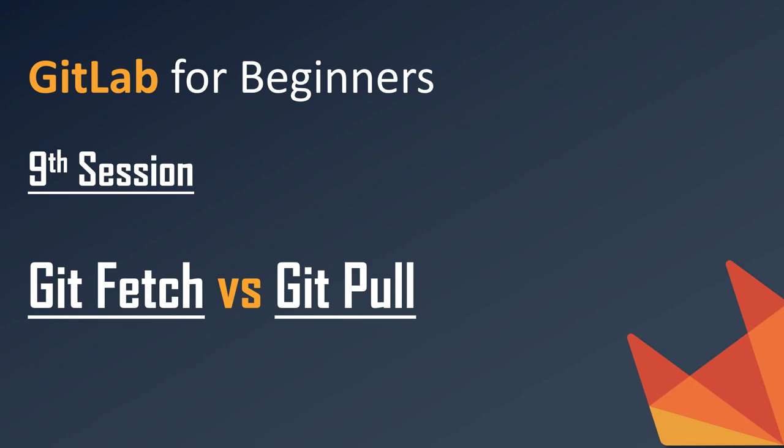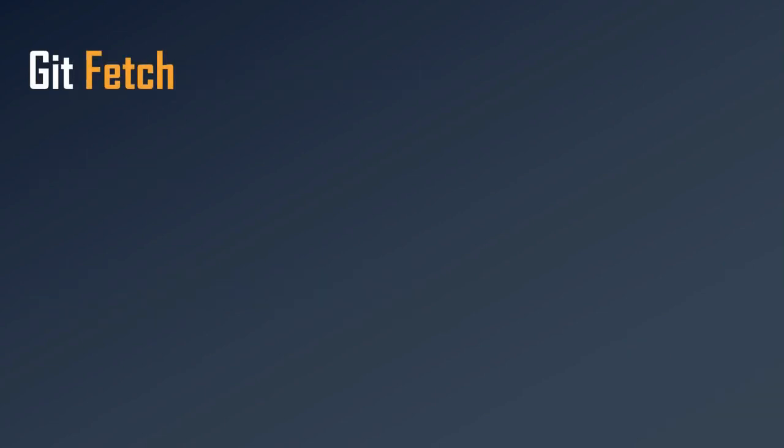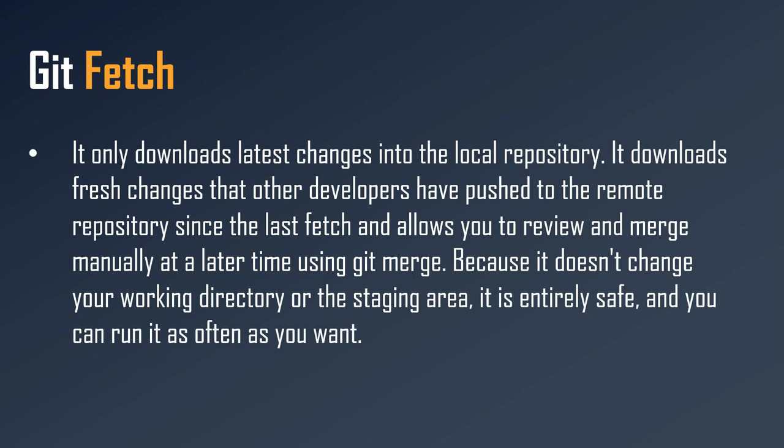Let's talk about git fetch. Git fetch only downloads the latest changes into the local repository. It downloads fresh changes that other developers have pushed to the remote repository since the last fetch, and allows you to review and merge manually at a later time using git merge.